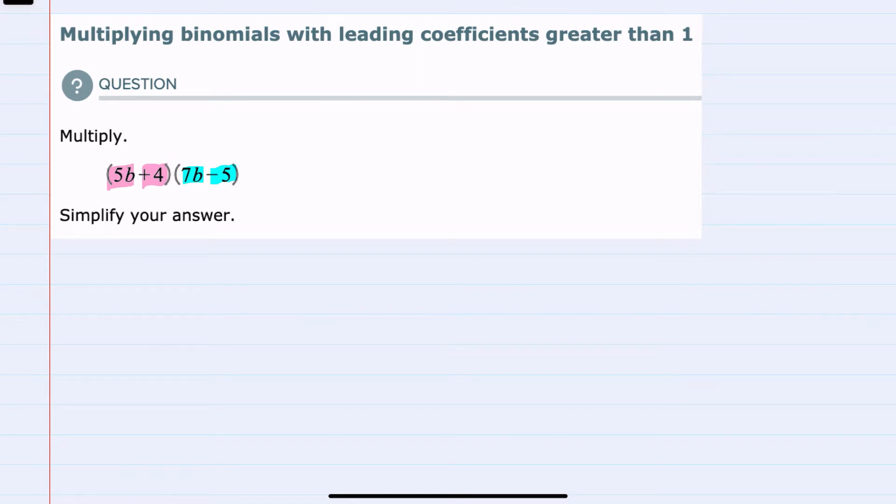You can think of this as the FOIL method. However, I'm just going to consider this multiplying. And I'm going to start by multiplying each one of those terms in the second binomial by 5b.